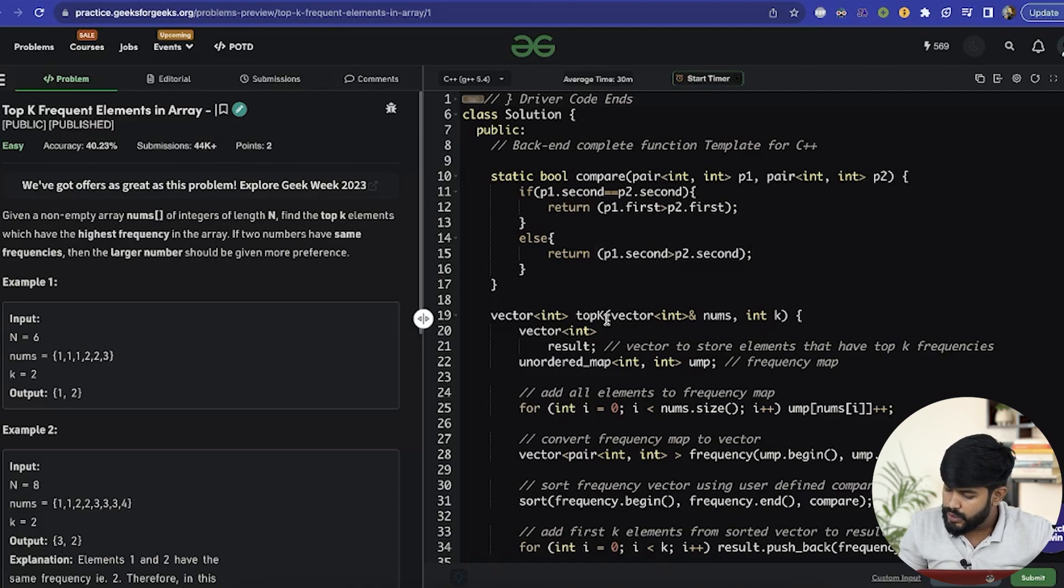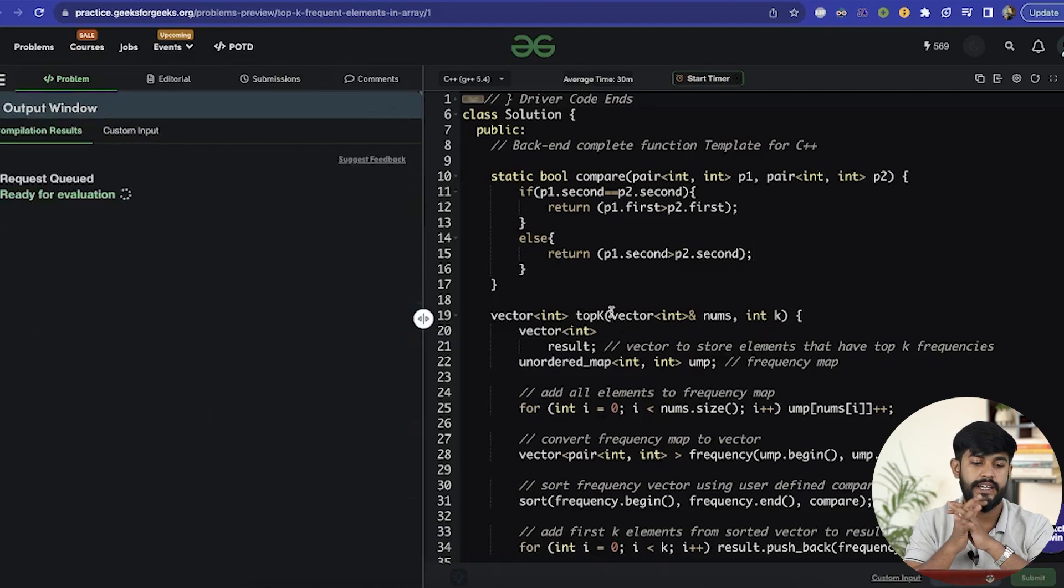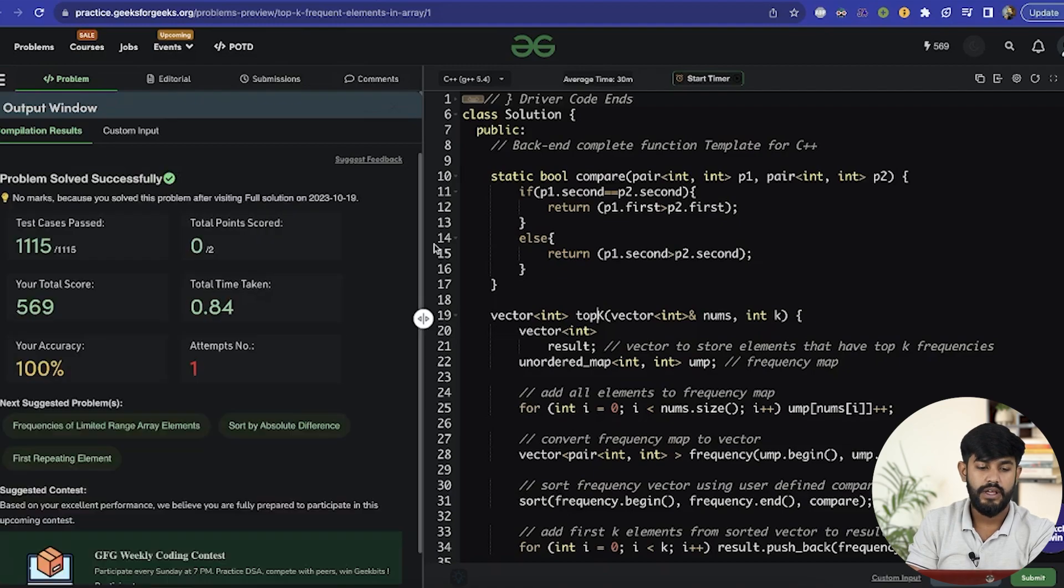So if the frequency is same we would implement this, if the frequency is not same we would implement this. This is what I would return. Now let us just compile and see how many errors we are making. Seems correct. Now let us submit this and see if we can get an AC or not. And yes we got an AC.